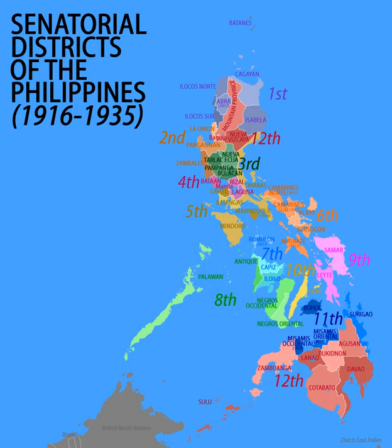First District — Provinces: Batanes, Cagayan, Ilocos Norte, Ilocos Sur, Isabela. Later additional provinces: Abra, separated from Ilocos Sur in 1917.